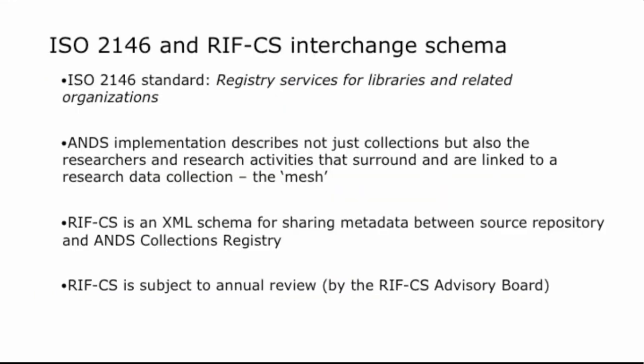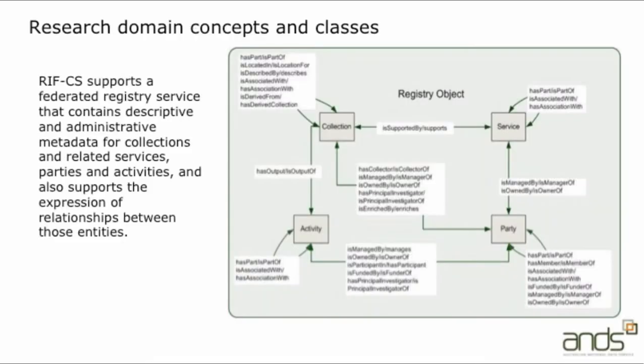The ISO standard 2146, which is the standard for directories and resource registries, has been adapted by ANS to suit our requirements. It caters for parties, which can be people or organisations; for activities, which are generally projects or programs of work; and services, which are likely to be services that actually do something with or provide access to data; as well as, of course, the collections themselves. To implement this standard we needed to work out what attributes to describe for each of these classes of objects and a means of moving those descriptions around — and so the method for doing this is RIFCS.